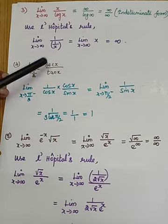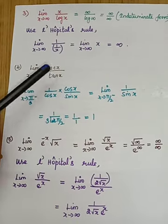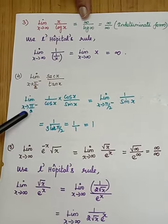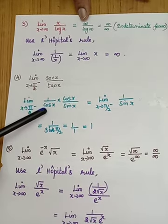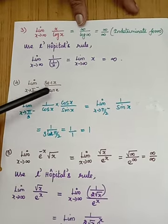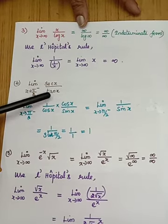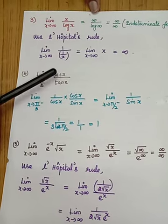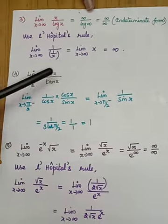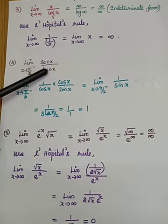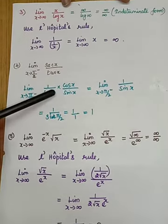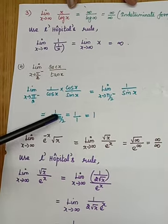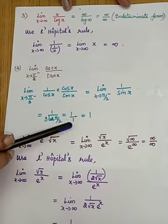Fourth problem: limit x→π/2 of sec x / tan x. Since sec x = 1/cos x and tan x = sin x/cos x, we can write this as (1/cos x)÷(sin x/cos x) = 1/sin x, where the cos x cancels. Apply the limit: 1/sin(π/2) = 1/1 = 1.